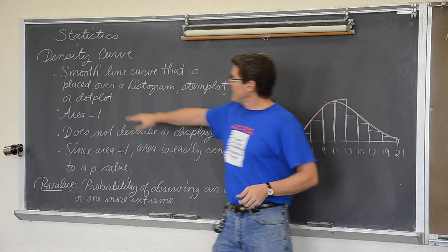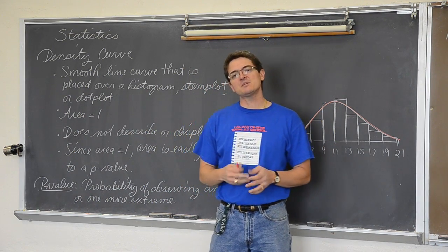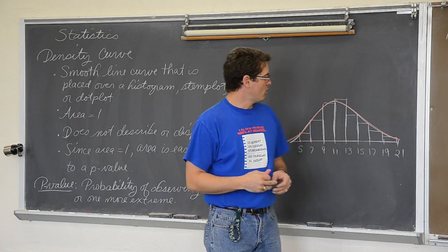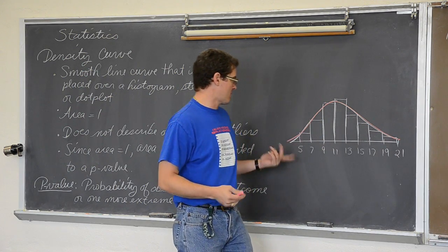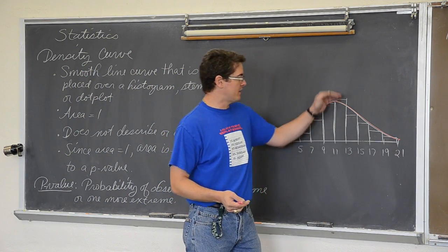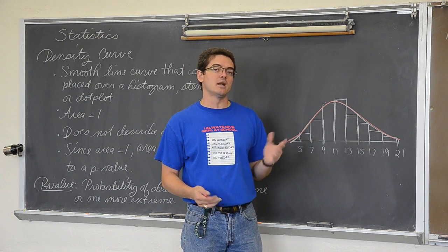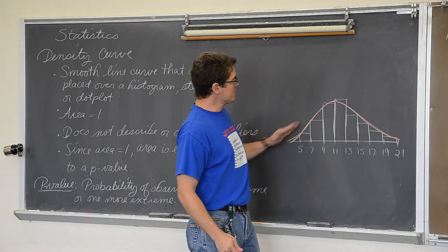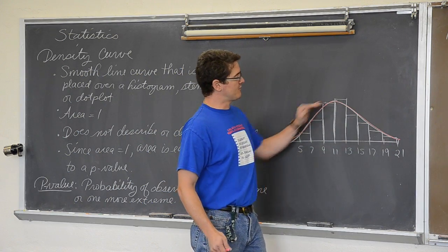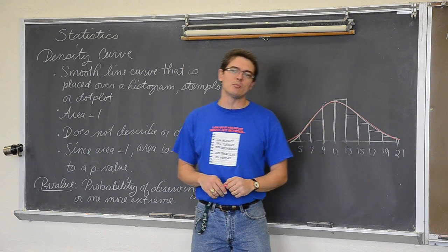It is a smooth line curve that is placed over a histogram, stem plot, or dot plot. Normally it is going to be histograms. The area of a density curve has to be an area of one. This histogram goes from 5 to 21 and we don't even know what the height is. So I am not going to say that the area of this histogram is equal to one.